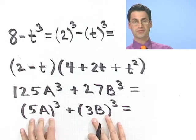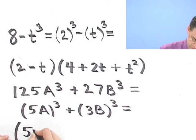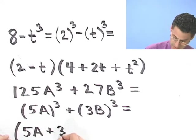So this is the sum of two perfect cubes. So how does it go? Well, first of all, I've got a factor which just has the sum of those two terms uncubed. So 5a plus 3b.